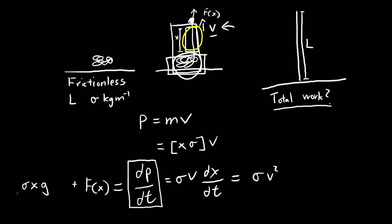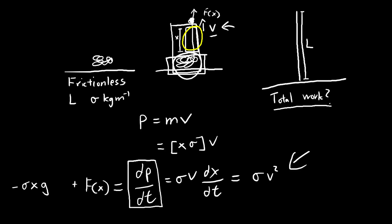And it's pointing downwards, so negative. So there we have it. Once we solve this equation, we would have found our force. So it's really just a simple rearrangement. So the force exerted by our hand upon the chain as a function of x is equal to sigma gx plus sigma v squared.